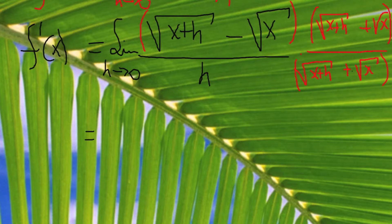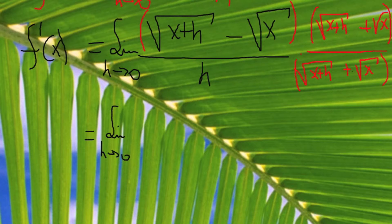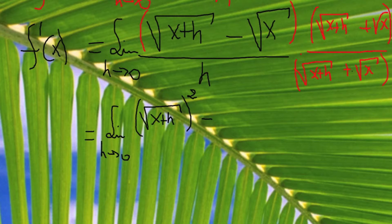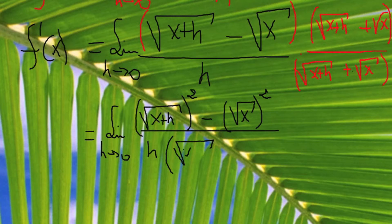Now if I FOIL the top — square root of x plus h minus square root of x, times square root of x plus h plus square root of x — this is in the form of a minus b times a plus b, which FOILs to a squared minus b squared. So the numerator becomes square root of x plus h squared minus square root of x squared, divided by h times that same conjugate quantity.